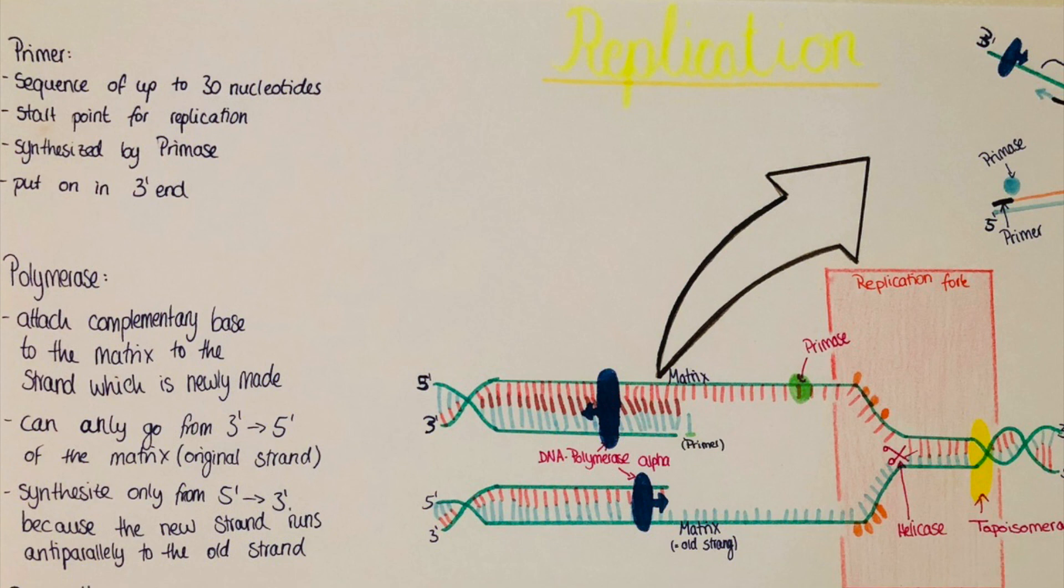So the primase has to set a primer again and again and again, and then the polymerase has to go there and attach them in the other direction. And then like this we have many of these sequences of primer, new DNA, primer, new DNA.